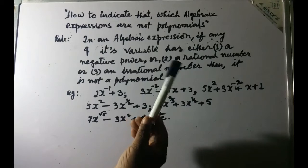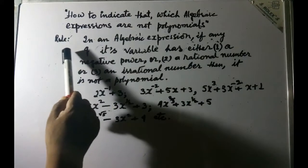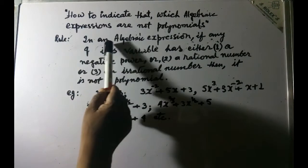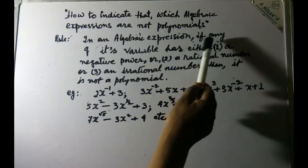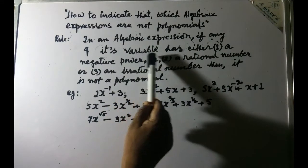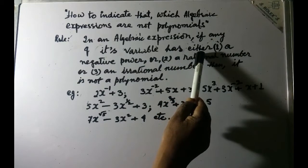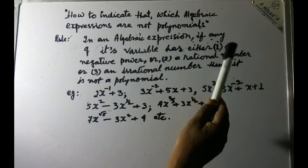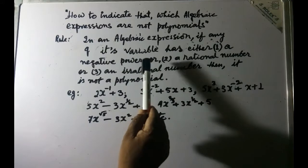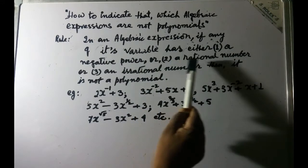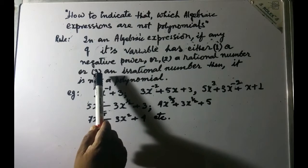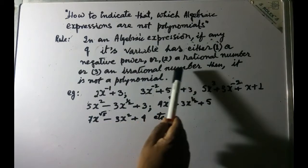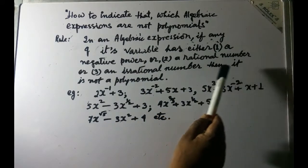The rule says like this: in an algebraic expression, if any of its variable has either number one a negative power, or number two a rational number, or number three an irrational number, then it is not a polynomial.